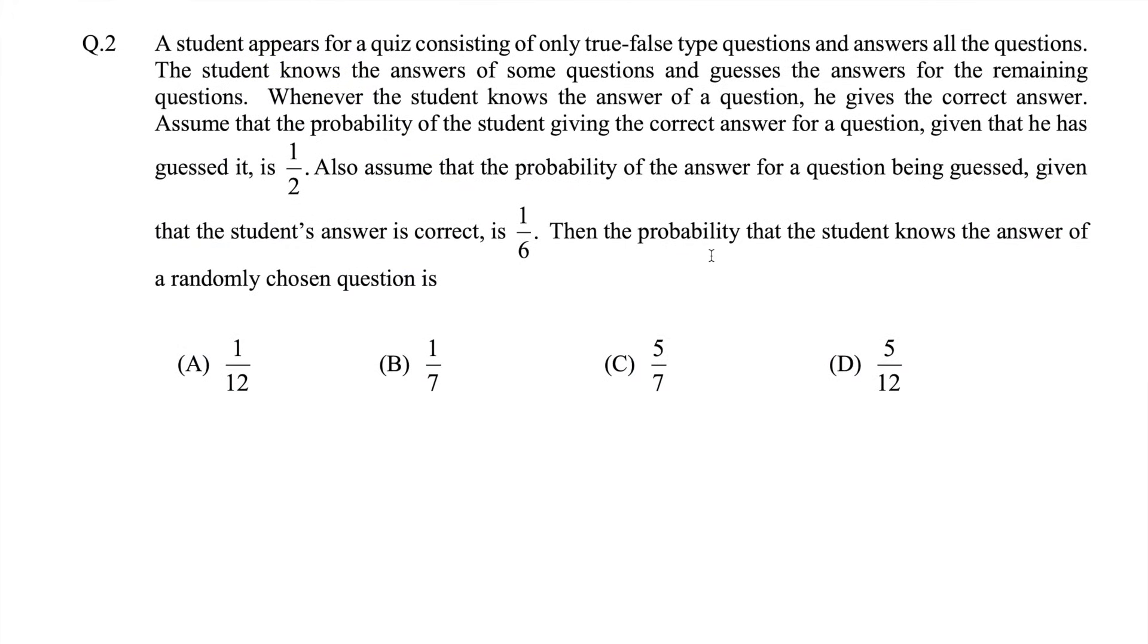Now coming back to the second question. This question is all about probability. A student appears for a quiz consisting of only true-false type questions and answers all the questions. The student knows the answers of some questions and guesses the answers for the remaining, and then you have the entire question with four answers.